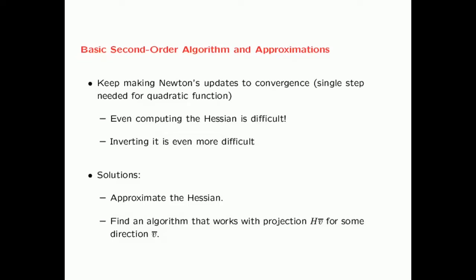However, this approach faces challenges. First, even computing the Hessian is very difficult because it is a large d×d matrix — note that back-propagation computes only first-order gradients, not second-order gradients. Inverting a d×d matrix is even more difficult. Solutions discussed in the literature include approximating the Hessian, or working with Hessian-vector products HV for some direction V.